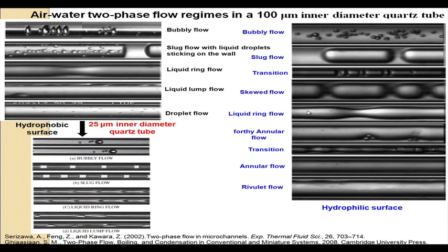There may be liquid droplets entrained in the gas core. More or less, from dispersed we have slug flow and from slug we get annular flow. At still higher velocities the gas core flows in a serpentine form or as a rivulet — a phenomenon not observed in macro systems. For hydrophobic tubes, since the liquid has very little tendency to wet the pipe wall, after liquid lump flow it is very difficult for the small amount of liquid to maintain a continuous film at the wall, so we develop droplet flow.